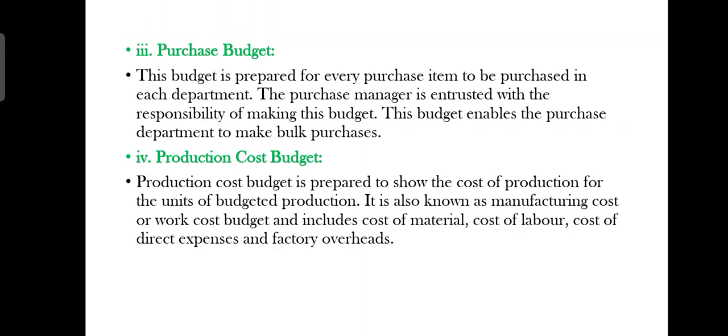The third functional budget is the purchase budget. This budget is prepared for every purchase item to be purchased in each department, and the purchase manager is responsible for making this budget. This budget enables the purchase department to make bulk purchases. We decide how many items we need to purchase; since we may already have some inventory, we determine how much additional material needs to be purchased, and that is recorded in the purchase budget.